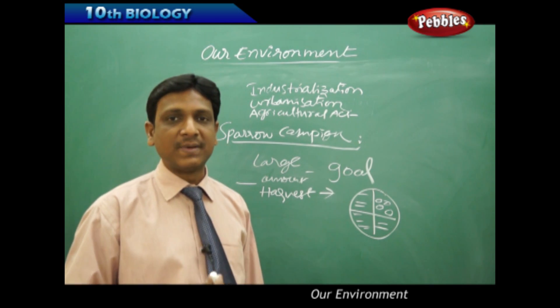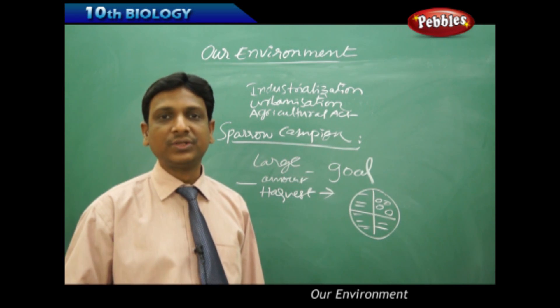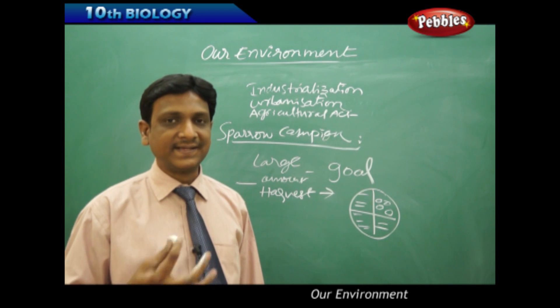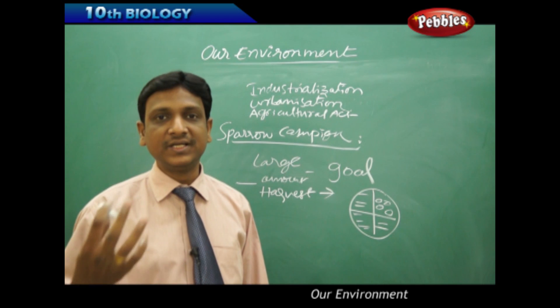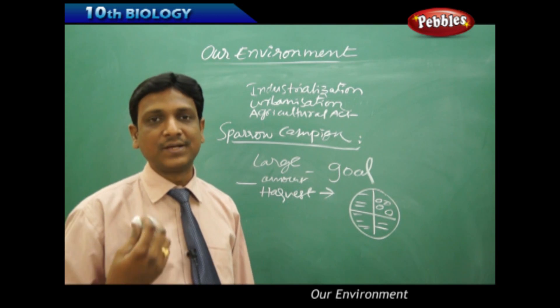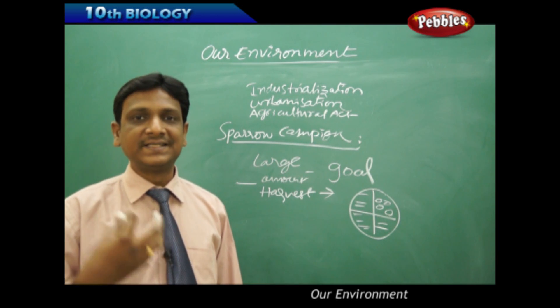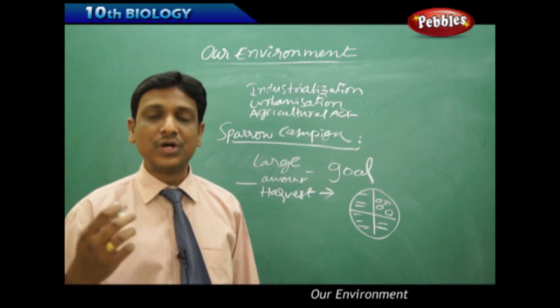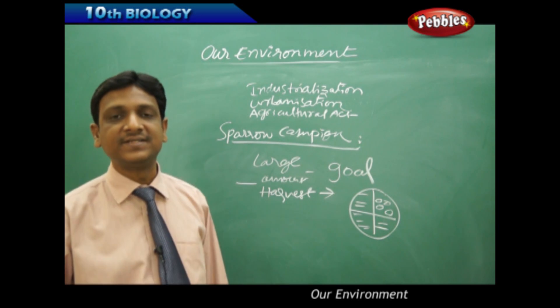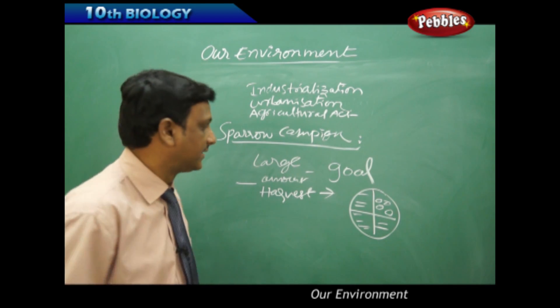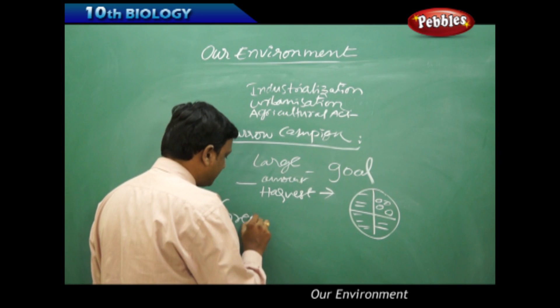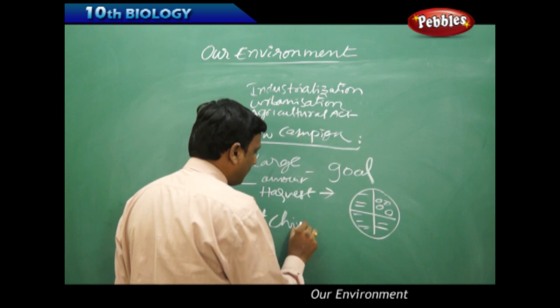After that, by controlling the sparrows, there was no growth in their crop. Suddenly, the insects swarmed their crops because there is no predator to control them. Sparrows are not there. The insects damaged the crops. To control the insects, they used insecticides and pesticides. They further deteriorated the land condition and it led to that great Chinese famine.